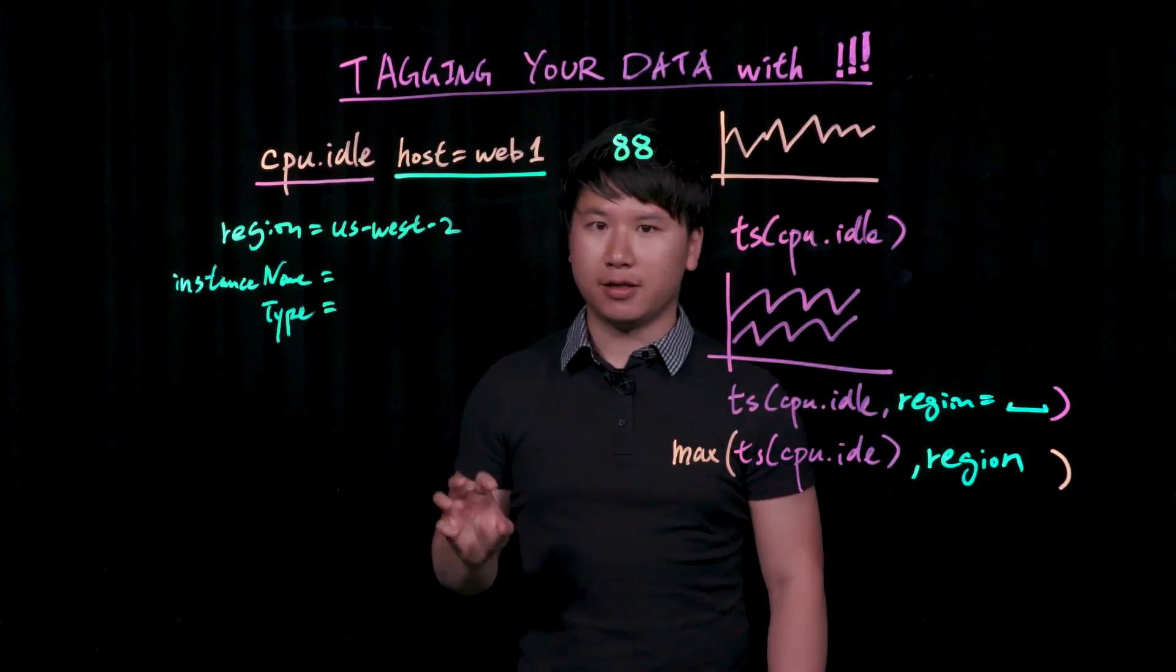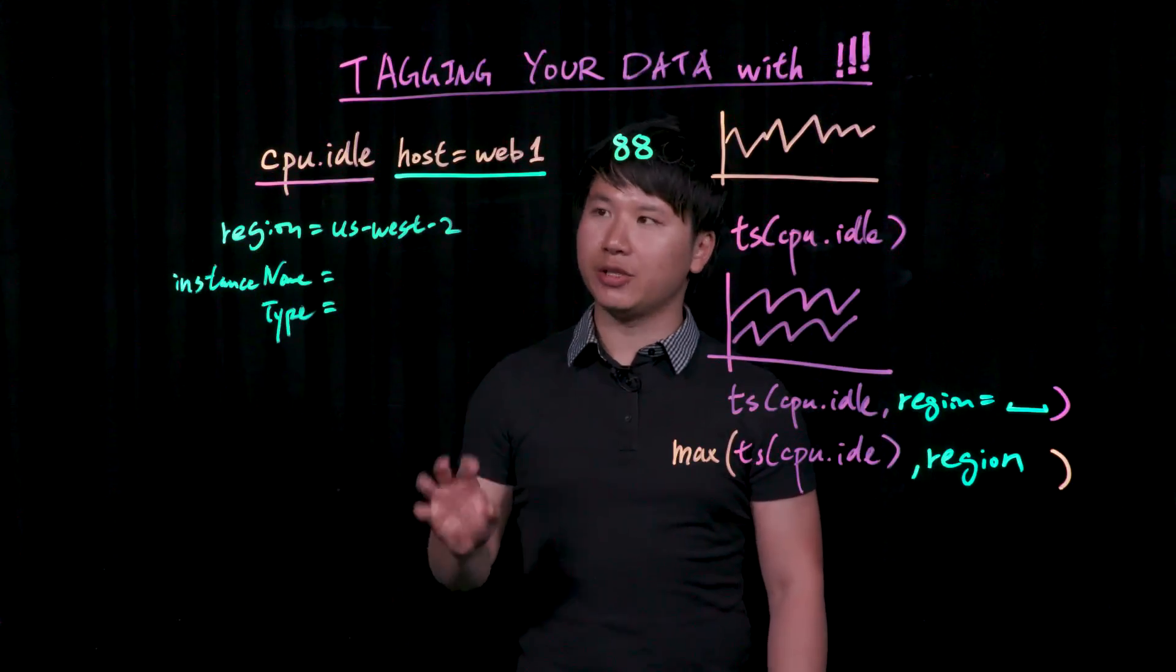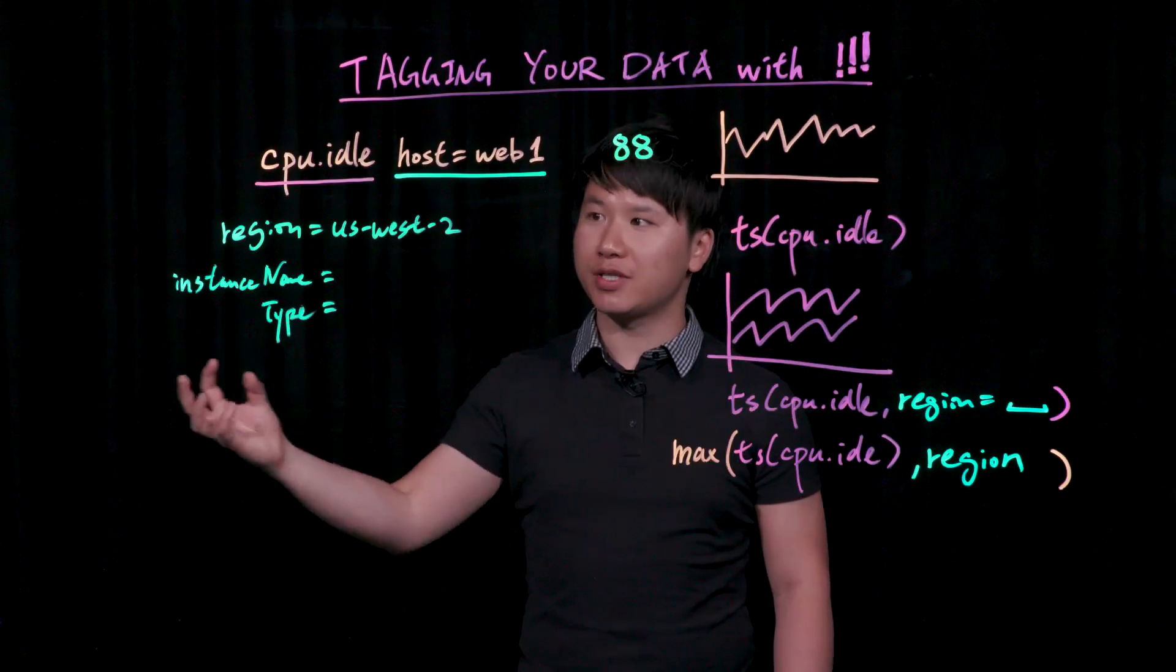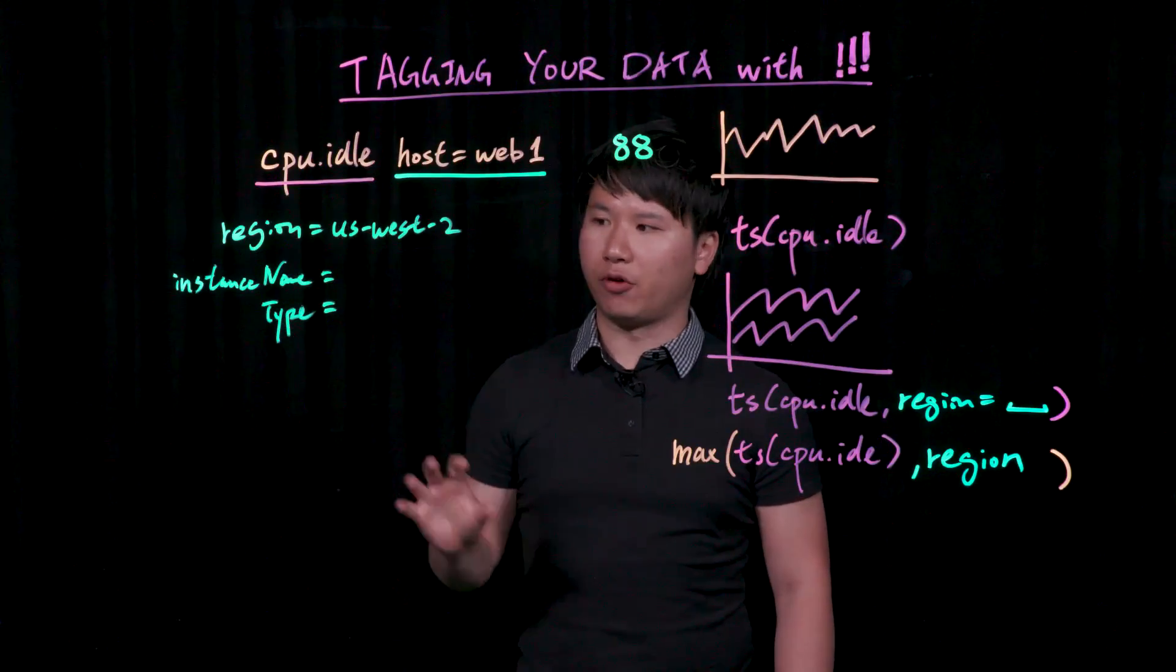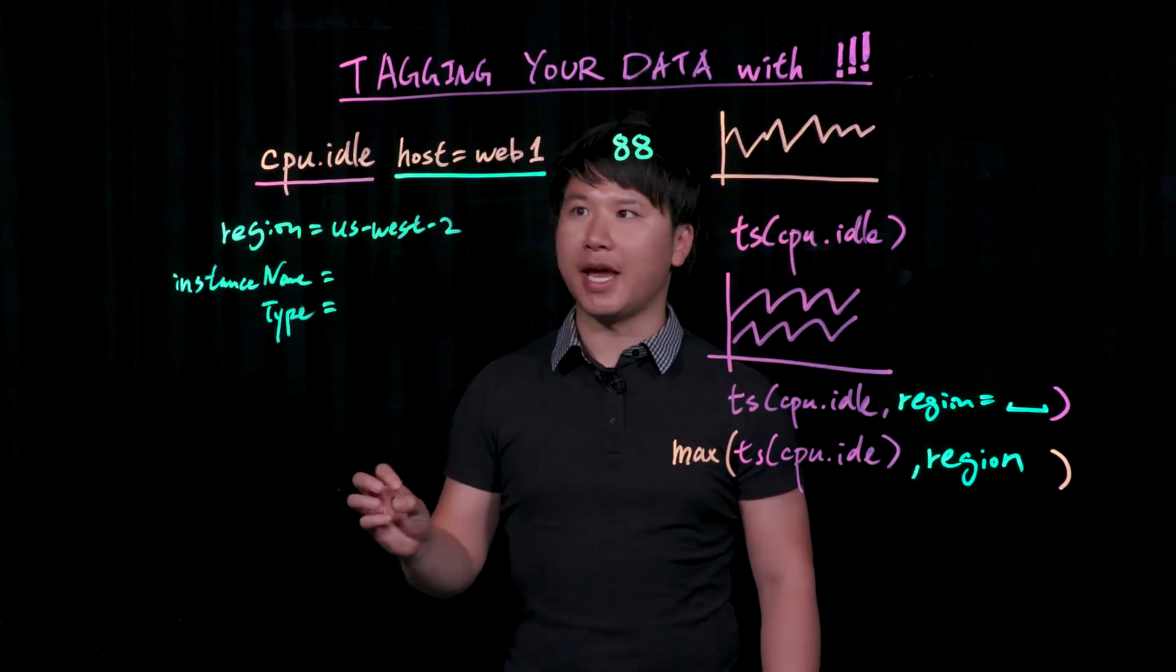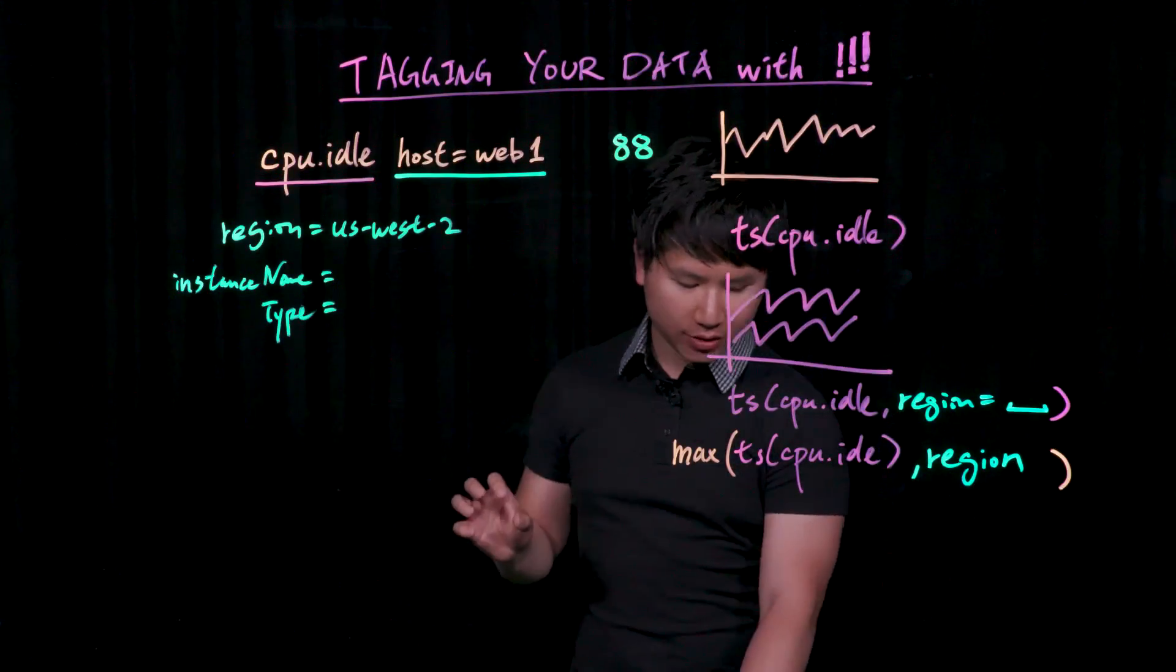With source tagging, that's different. What you would actually express is a group of machines that you could tag outside of ingestion. For example, you could use our UI, or you could use our API to say web machines belongs to a single group.